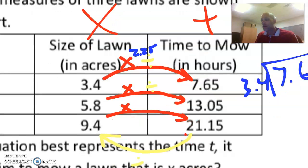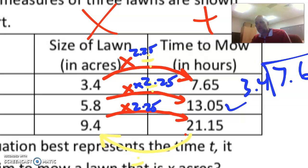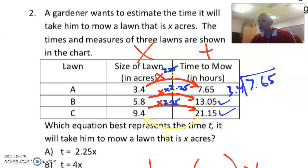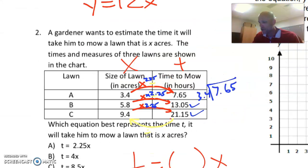Alright, so now I'm going to try 5.8 times 2.25. And that equals that, 13.05. So I'm going to do it again. 9.4 times 2.25. And hopefully it equals 21.15. 9.4 times 2.25. 21.15. Alright, so it is times 2 and a quarter. It is A.